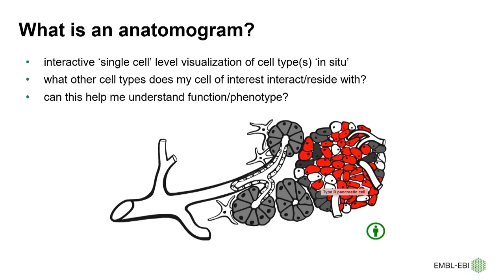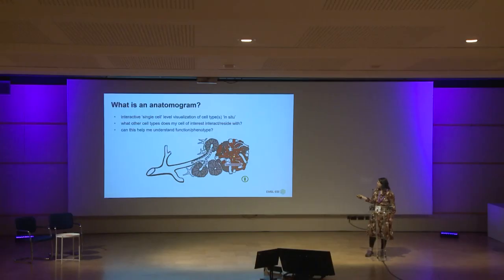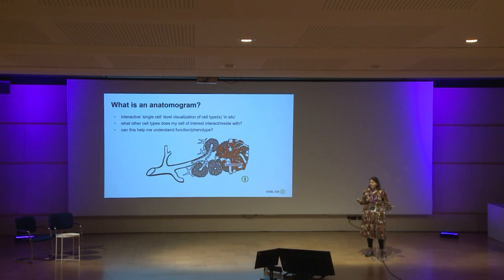A little bit more detail on an anatomogram and to define it: these are interactive single cell level visualizations of cell types in situ, within the tissue of that organism. This allows users to investigate what other cell types does my cell of interest interact or reside with, and can this help me understand why I see a particular function or phenotype if genes integral to that cell type get perturbed or as a result of disease. These are all single cells, and when you hover over, you get your cell type label — they do interact with the user.